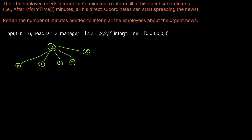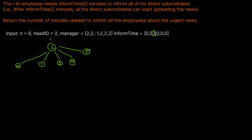How long does it take for employee 0 to inform all of its subordinates? It's going to take zero time because they don't have any subordinates. Same with 1, 3, 4, and 5. All we're interested in is the time for employee 2 to inform all of its subordinates, which is 1. So in one call it can inform all these people, and our answer is 1.